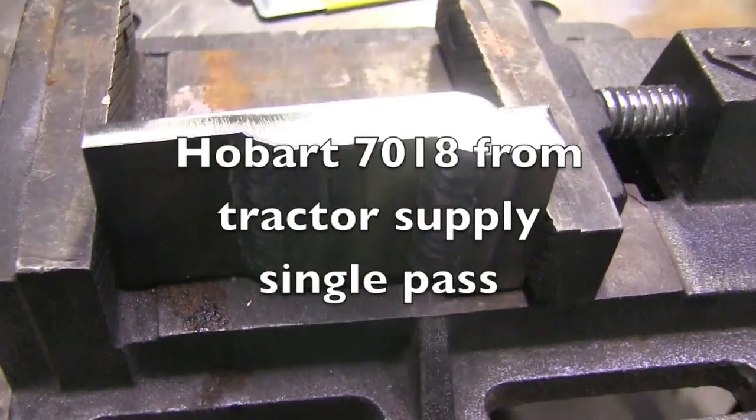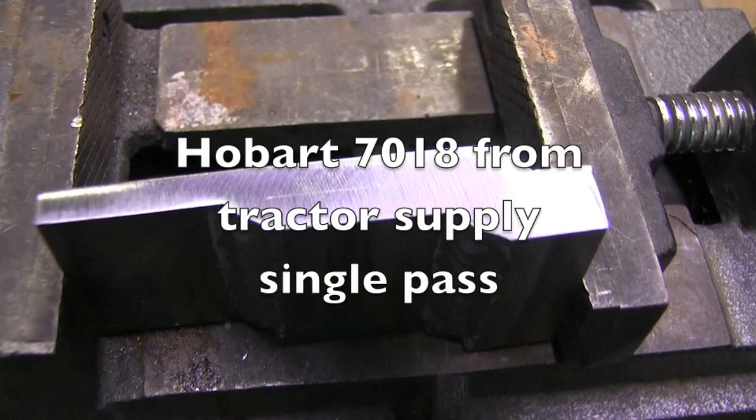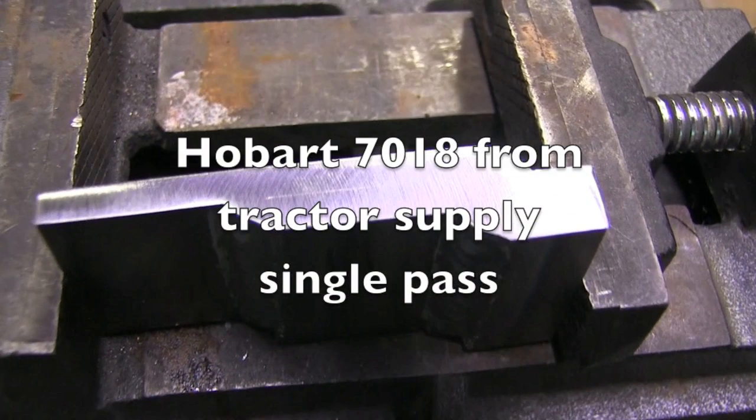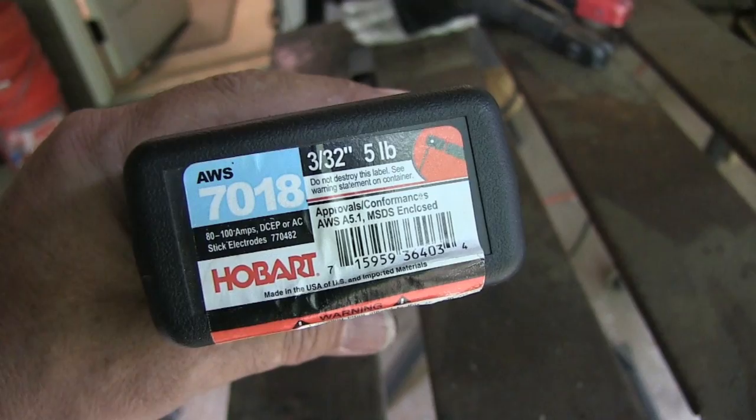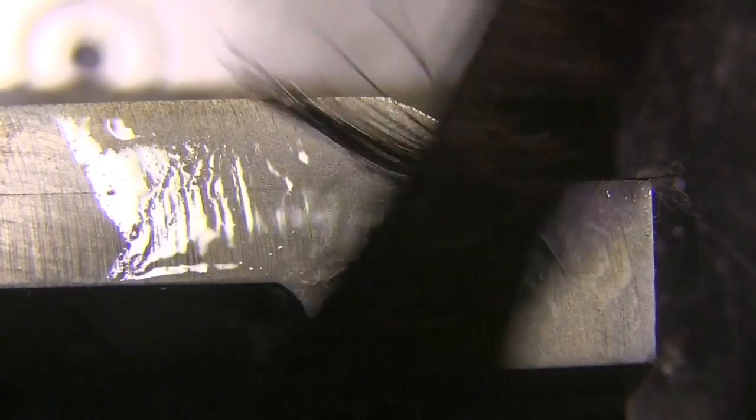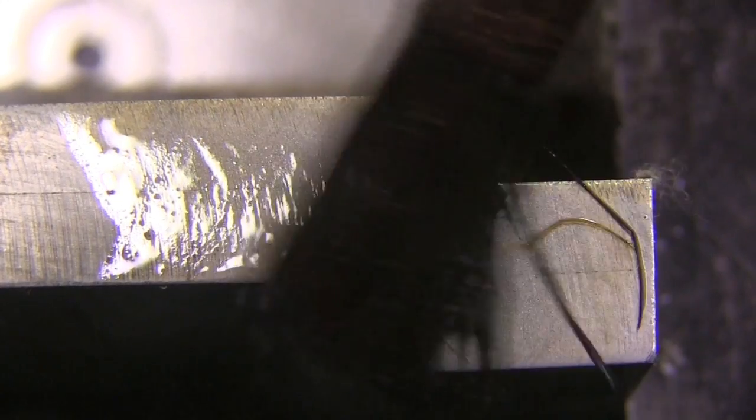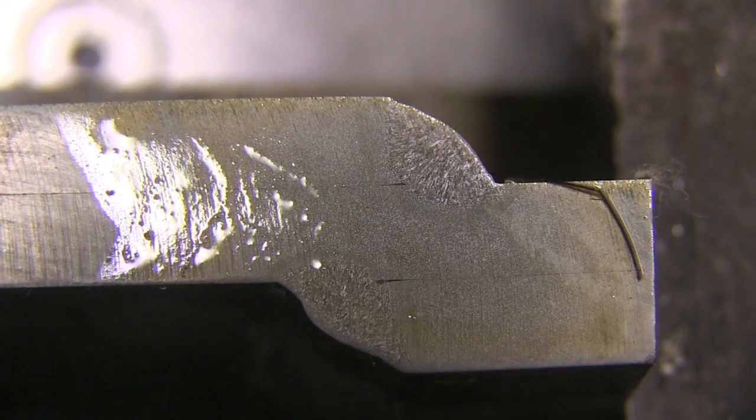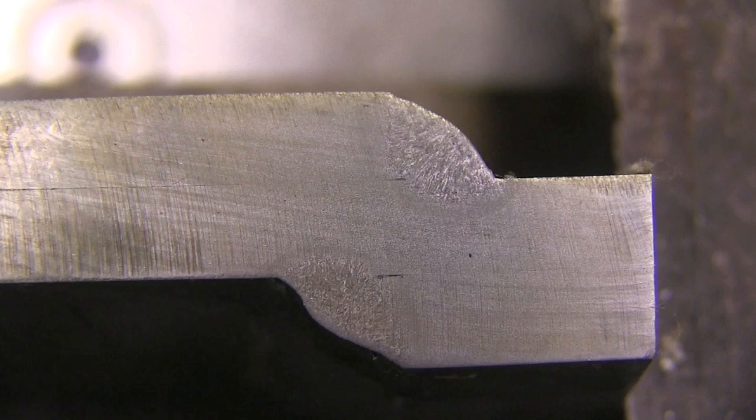First up is the Hobart 7018 that I got from Tractor Supply, single pass welds, 3/32. Nothing glaringly wrong there. Even the one that looked kind of cold to start with turned out just fine.